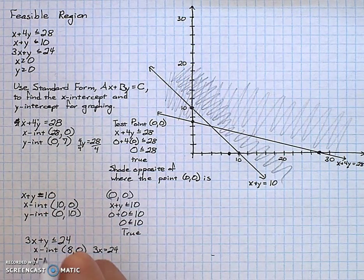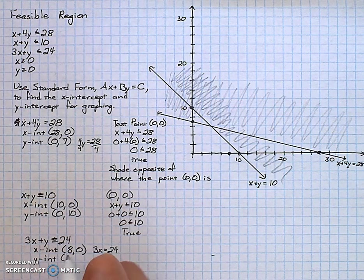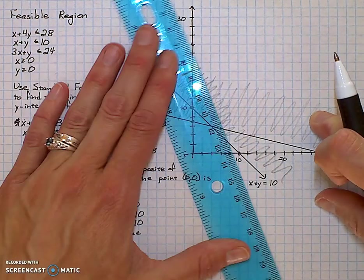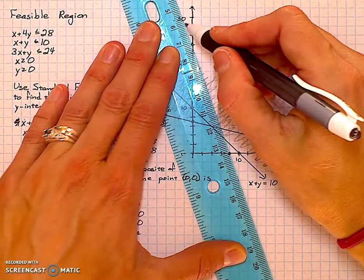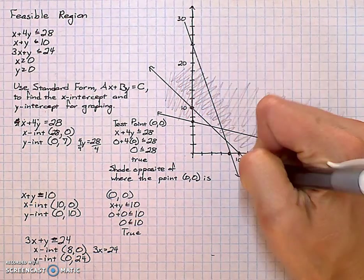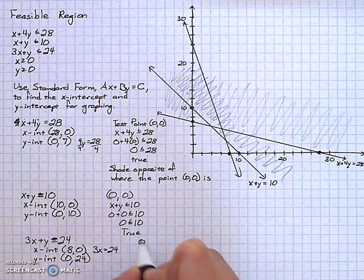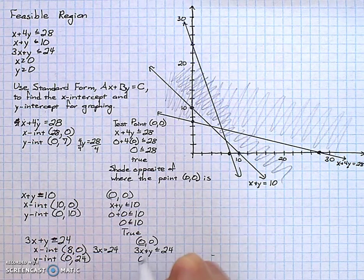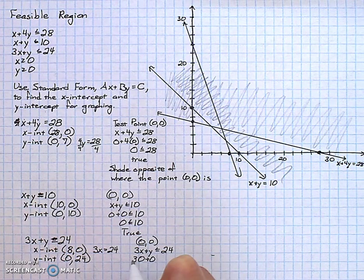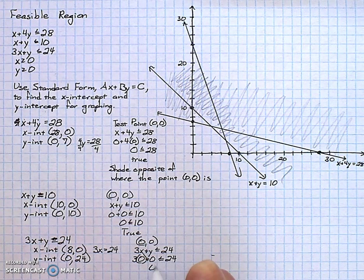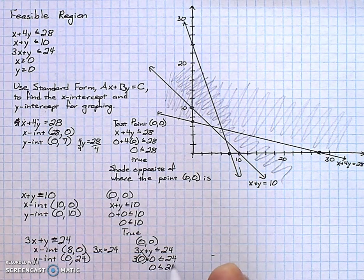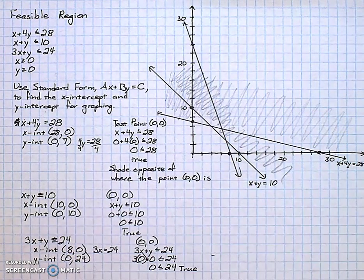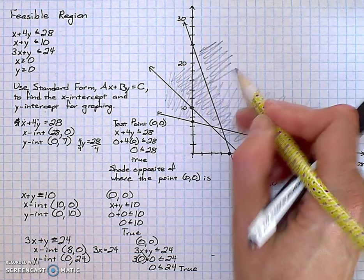The y-intercept occurs at 24. Once again, doing the test point of 0, 0 in the original inequality, I come up with a true statement. True would be to the left of my line. I want to shade where it's false. I only do this when I'm looking for feasible regions.